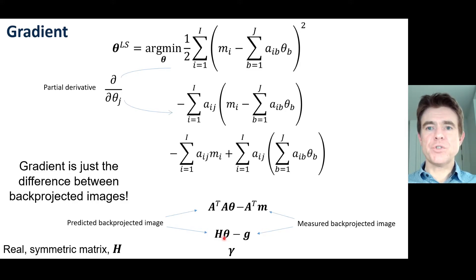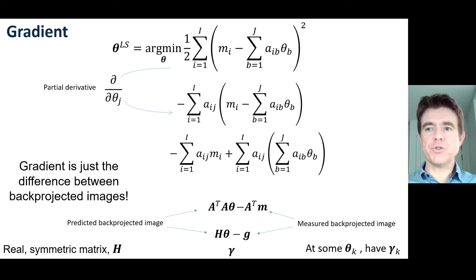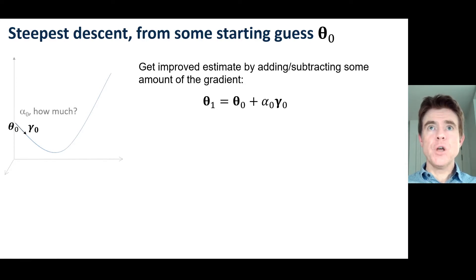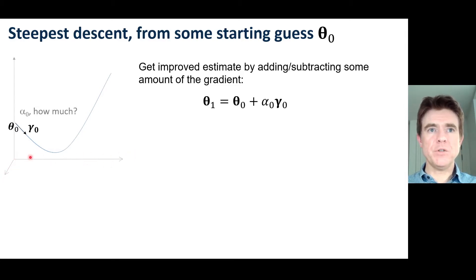For shorthand, that difference in back-projected images is just the gradient vector gamma. So for any given current estimate of the parameter vector — such as the image we are reconstructing — for some estimate theta k we have a corresponding gradient vector gamma k, which corresponds to taking theta k, forward-projecting it, back-projecting it, and then comparing it to the actual measured back-projected image g. This is the steepest descent approach: we have some starting estimate theta 0, represented on the figure as a two-element vector with one value along each axis, and the third direction represents the objective function — the cost function.